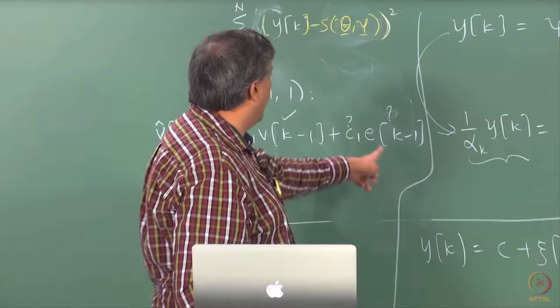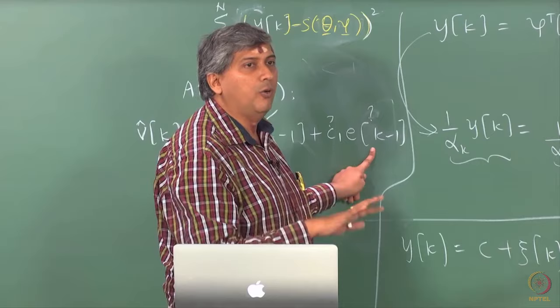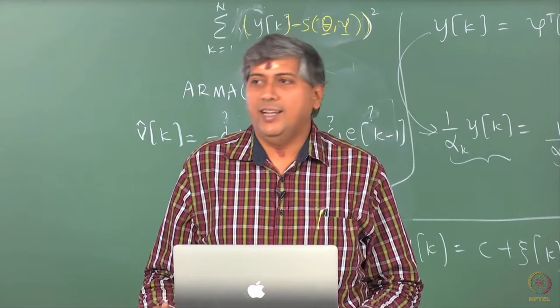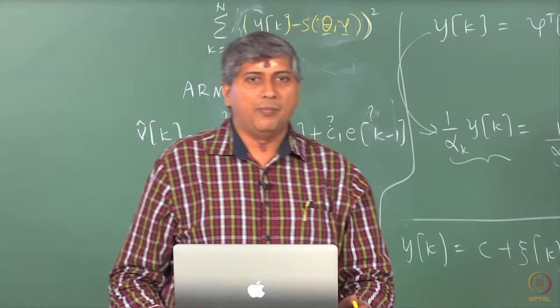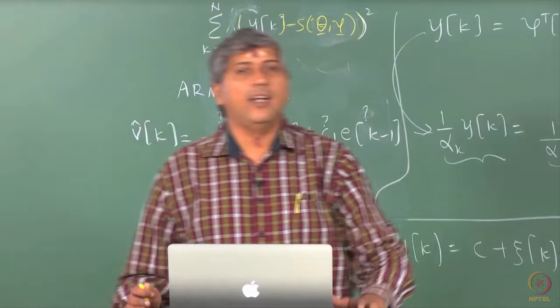That means the right-hand side is a complicated function of theta, because e(k-1) — if I were to rewrite this in terms of theta and the data — you end up with a non-linear function. This is a standard thing: even if you did not have the AR component, and only had the moving average model, you would still end up with a non-linear function. So in time series modeling, you will routinely run into non-linear least squares. There is no escape.